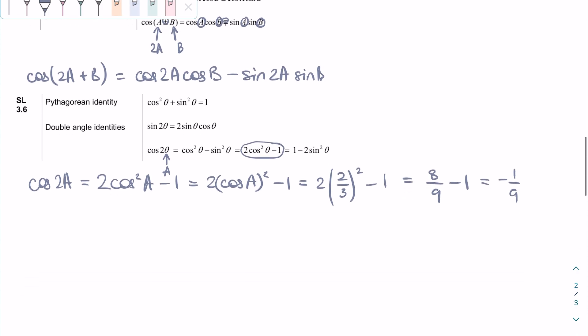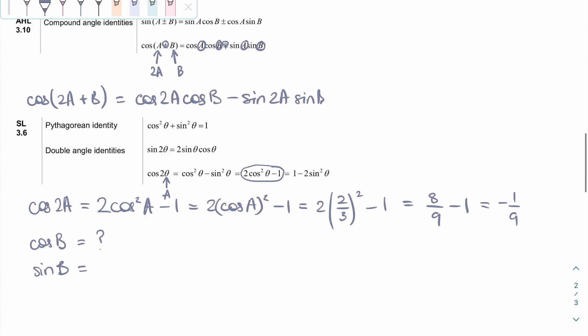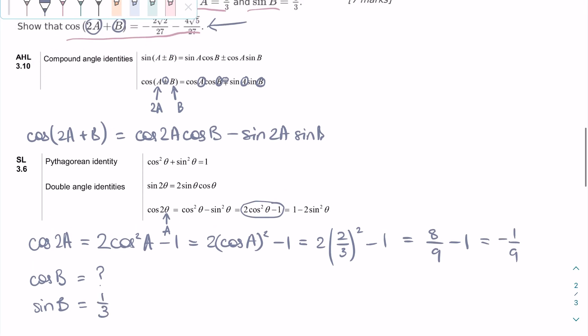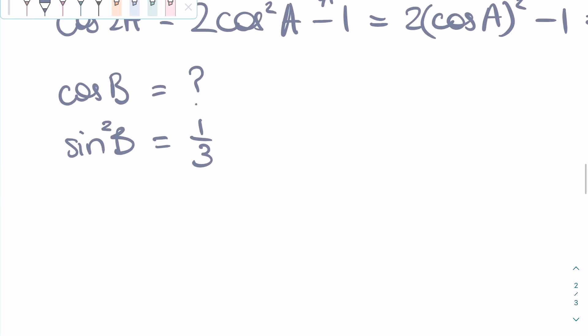Next, we need to find the numerical value of cosine B. We can start with what we know. We know that sine B is equal to 1/3 from the given. Next, we can use the Pythagorean identities. So we can square both sides to get sine squared B is equal to 1/9.